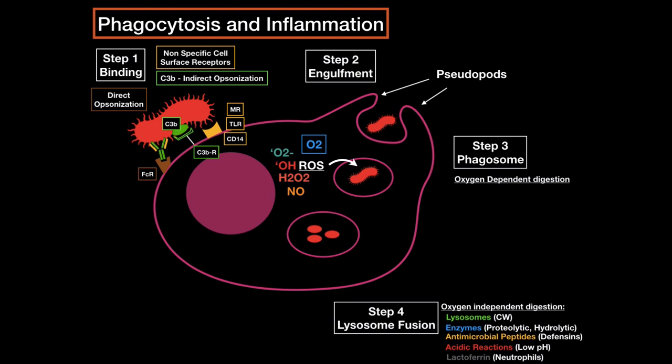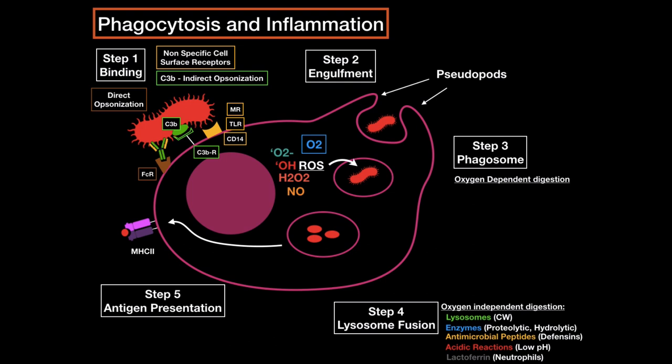Step 5: if it's an antigen-presenting cell, it's going to present the peptide on an MHC class 2 molecule. Macrophages and dendritic cells do this. Neutrophils and mast cells, which are not antigen-presenting cells, just release their content into the lymph vessels so that B cells or other phagocytes in that area can catch the peptides, and then further reactions can happen from there.